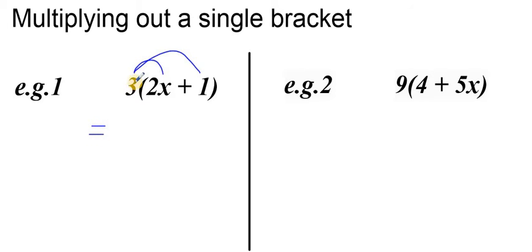The first multiplication is 3 times 2x so that gives me 6x. We have an add sign so that stays the same, plus last multiplication 3 times 1, 3.